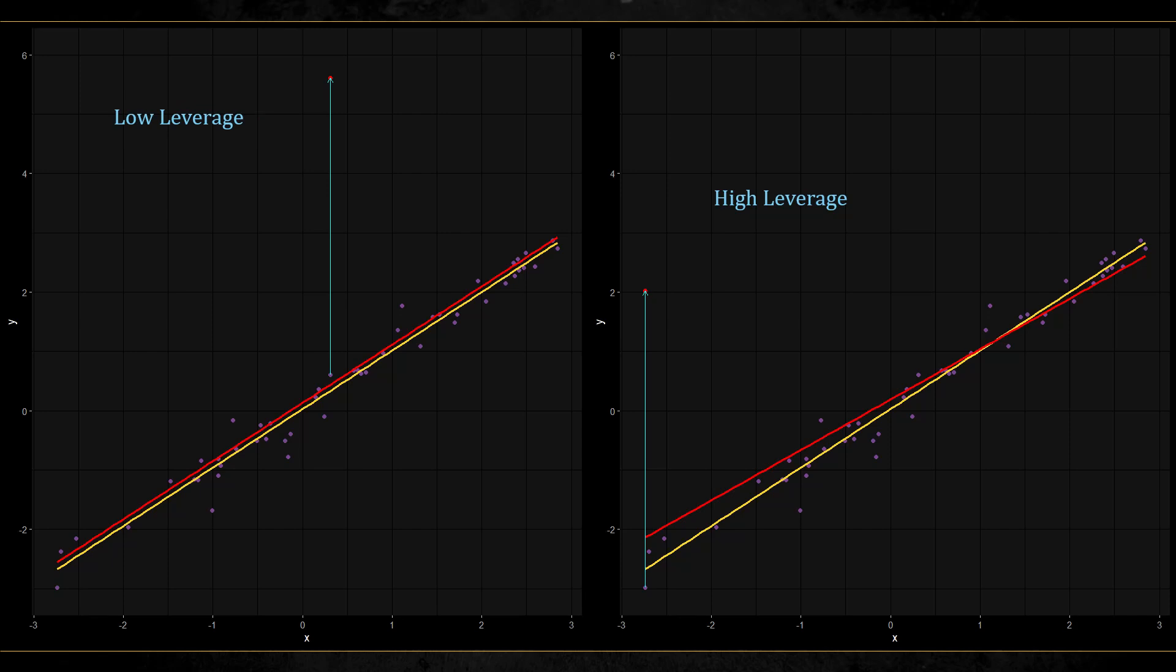We see that the new regression line is very similar to the old one. On the right, you can see what happens when we chose a point with a high leverage. We see the change to the regression line is much more severe.